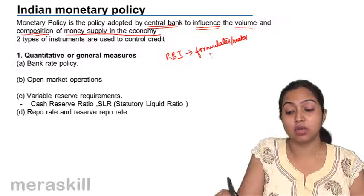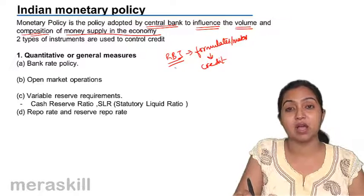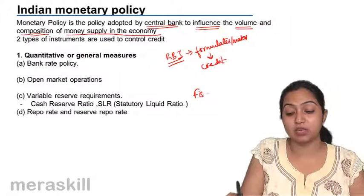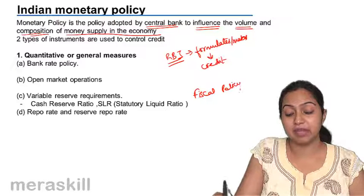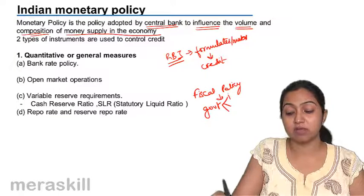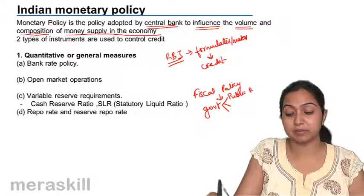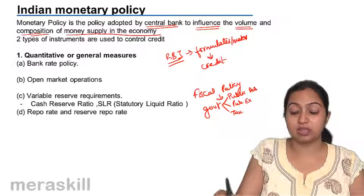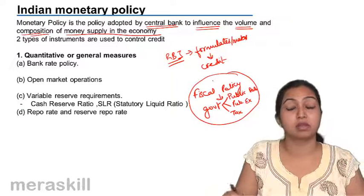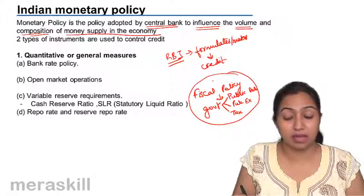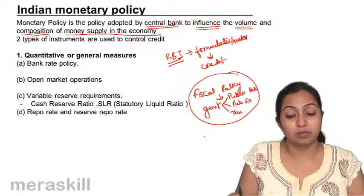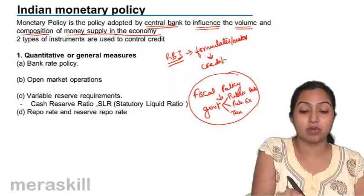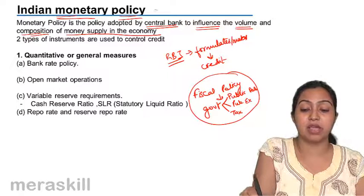It is to control credit. Monetary policy is made by RBI, and fiscal policy to influence the economy is made by the government. The government, through its means of public debt, public expenditure, and taxation, influences the economic activities. Here we are talking about the monetary policy, which is made by RBI.